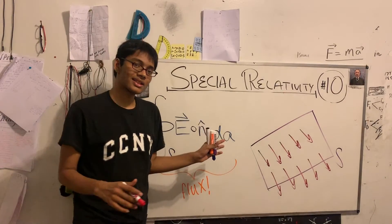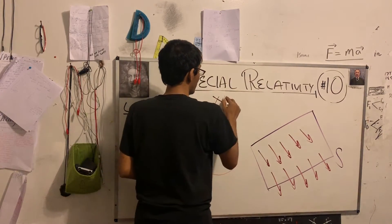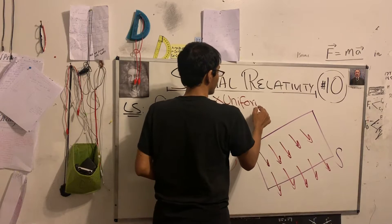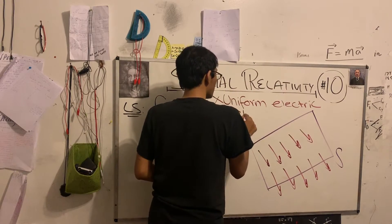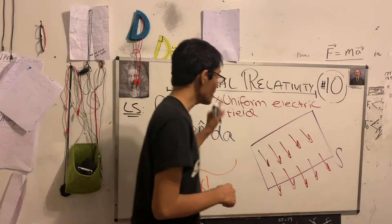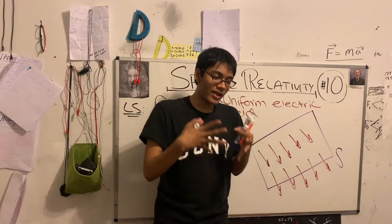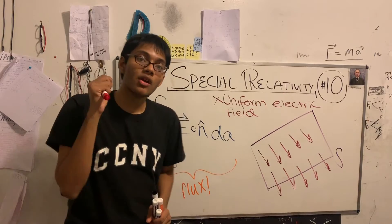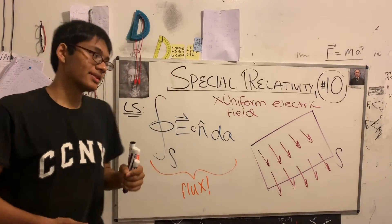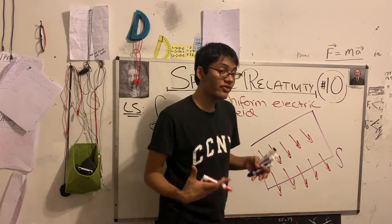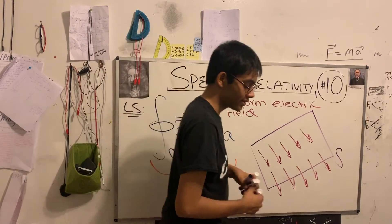Now if you look carefully at this electric field, two things stand out. First and foremost is that it is a uniform electric field. What do I mean by uniform electric field? I was really confused by this when I was first starting out, because it's a single word but it carries so much meaning. A uniform electric field means that the magnitude and direction of every single vector within my electric field remains constant.